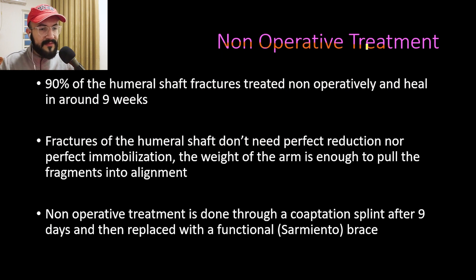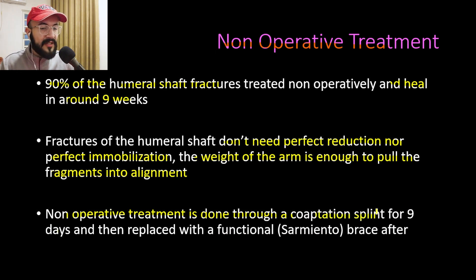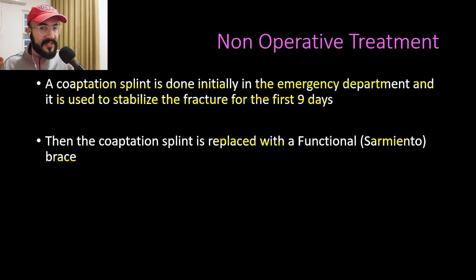Non-operative treatment is used in 90 percent of humeral shaft fractures; they heal in around nine weeks. These fractures do not need perfect reduction or perfect immobilization because the weight of the arm is enough to pull the fragments into alignment. Non-operative treatment begins with a coaptation splint applied for nine days, then replaced with a functional Sarmiento brace.